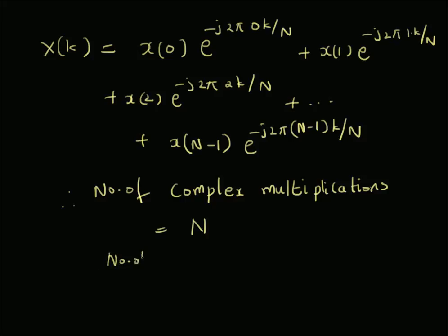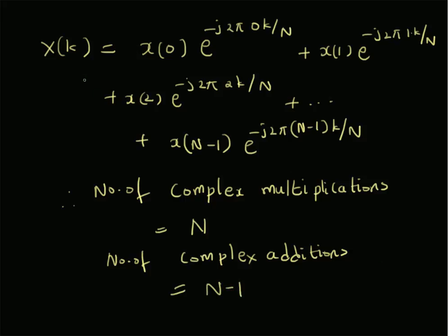The number of complex additions will be N minus one, because there are N terms and therefore N minus one additions — one less than the number of terms. So the number of complex additions for a given k is N minus one.